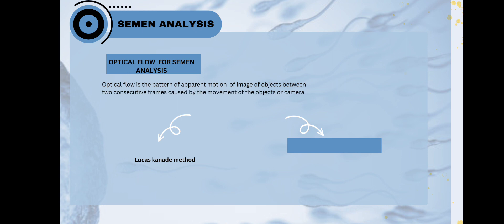Here, we have different methods to determine the optical flow. First, let's understand about optical flow. Optical flow basically is a pattern of apparent motion of object between two consecutive frames, caused by either the movement of object or camera. Here, camera is still and objects are moving.